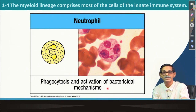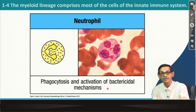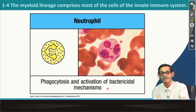Neutrophils — this is again a phagocytic cell. It can eat bacteria, and it is a very, very good killer. Activation of bactericidal activity mechanisms is mostly initiated by neutrophils at the site of infection in the tissue.